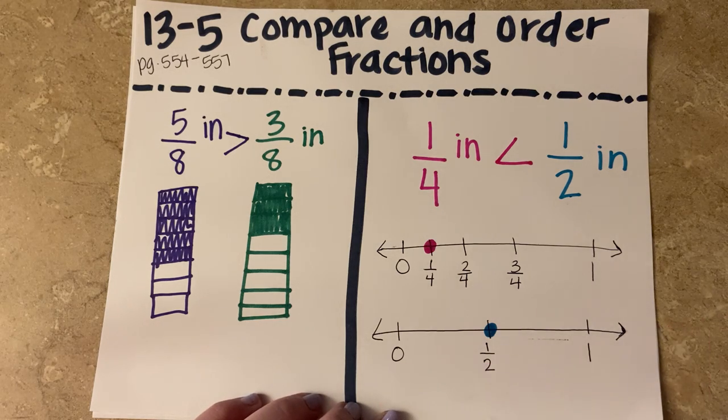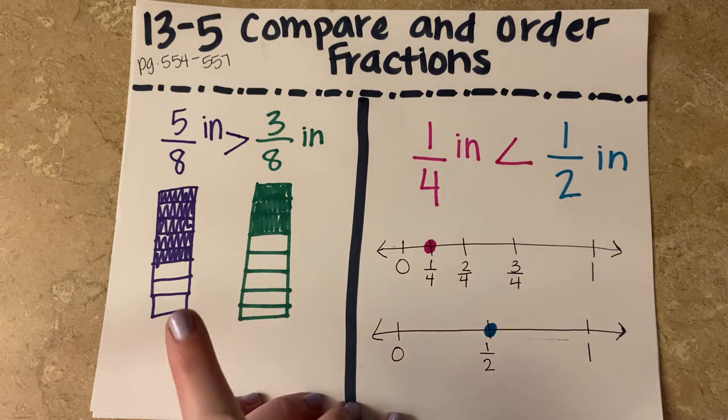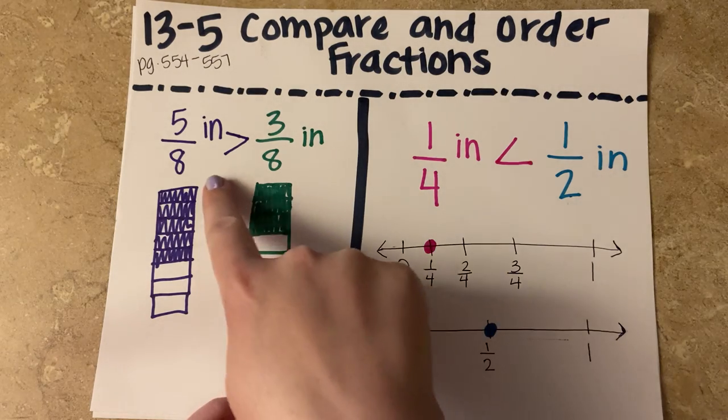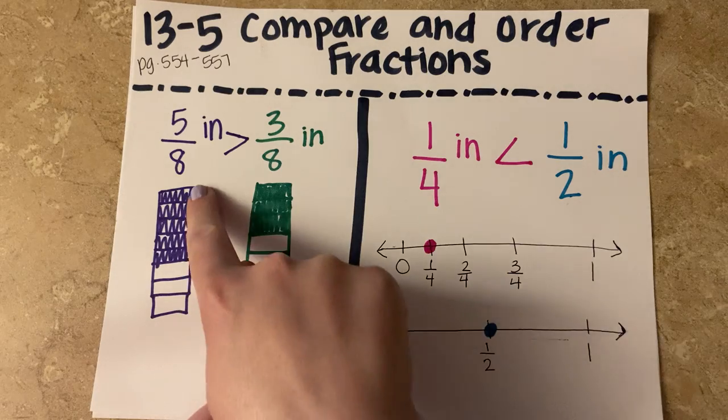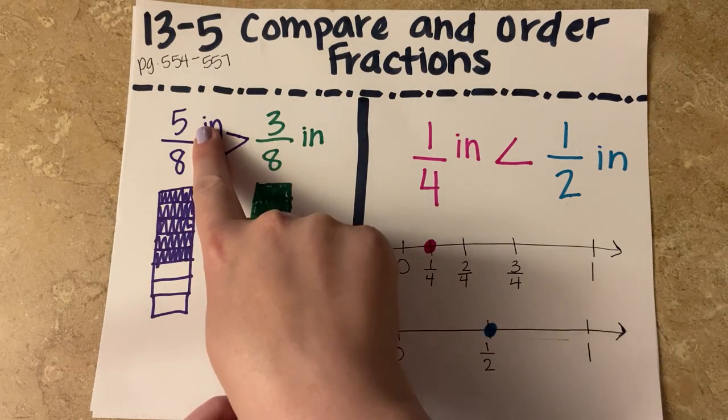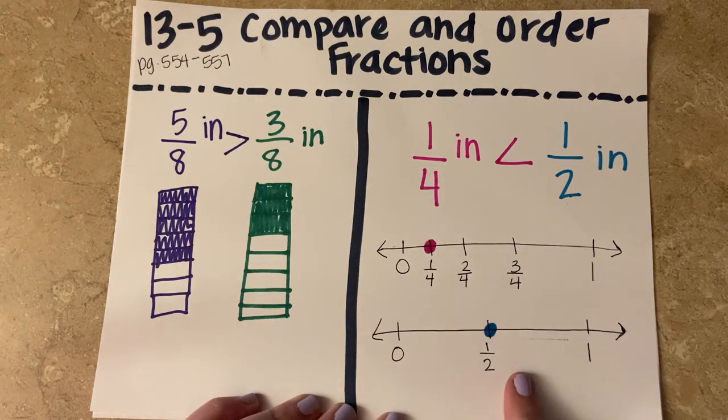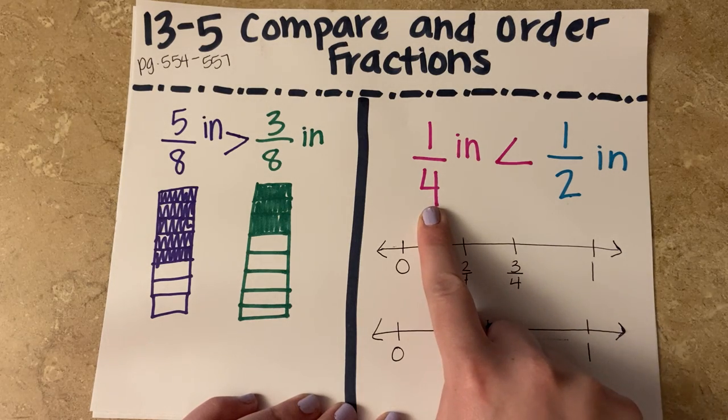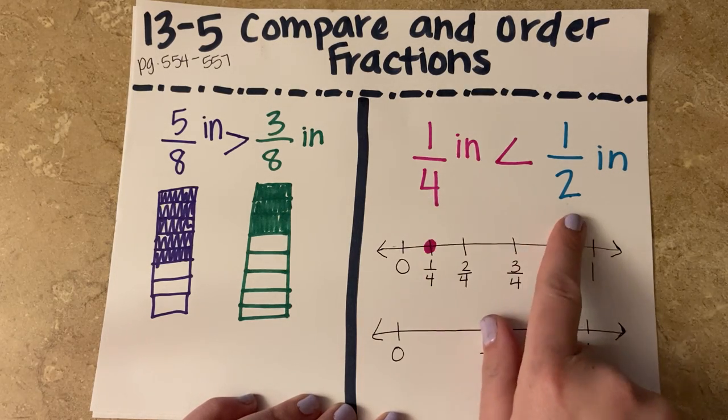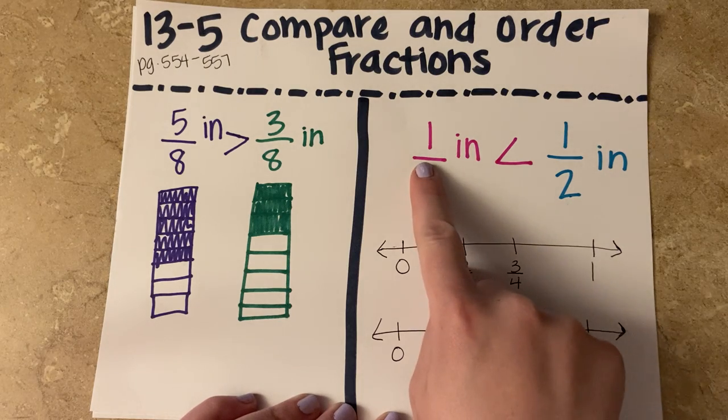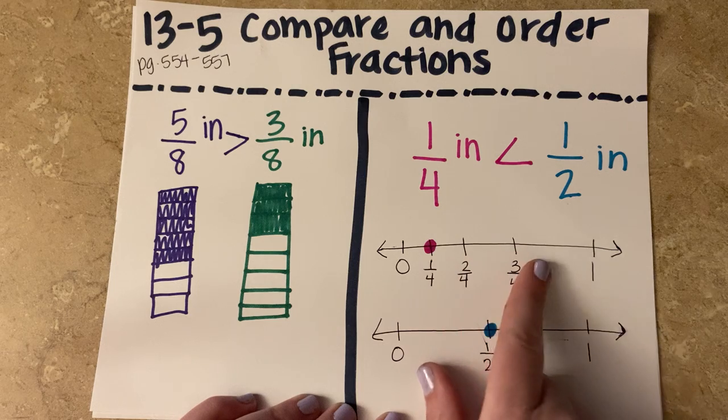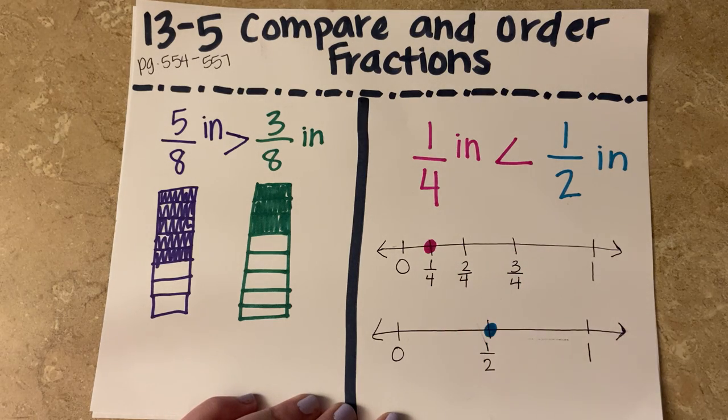So when you're trying to compare fractions, you can either draw a picture that looks something like this, where we have the equal parts, and you shade in the ones for the numerator. Or you could put them on a number line and figure out how many equal parts do you need to get to one whole from the denominator, and how many of those sections you need to count on your number line.